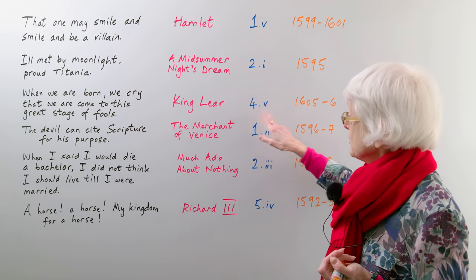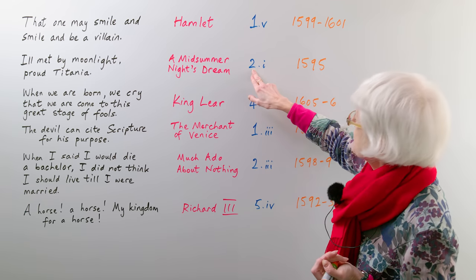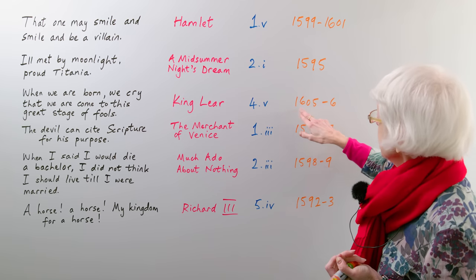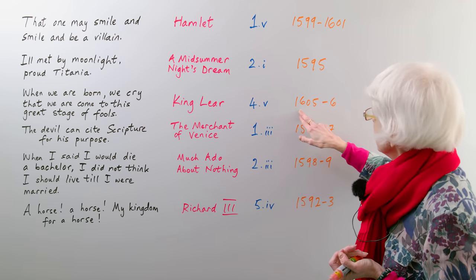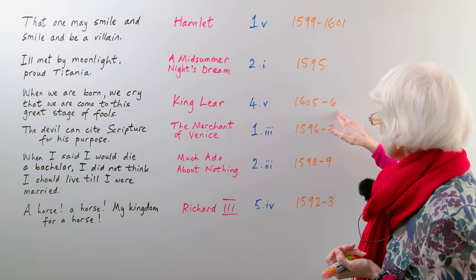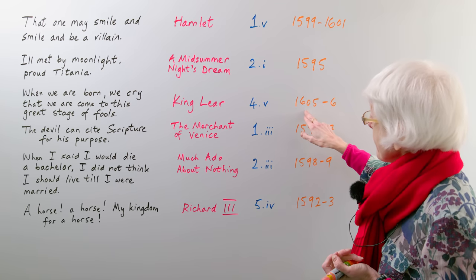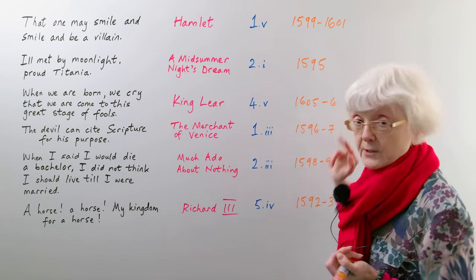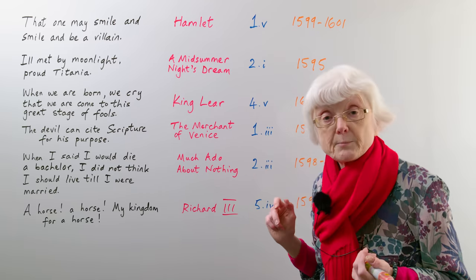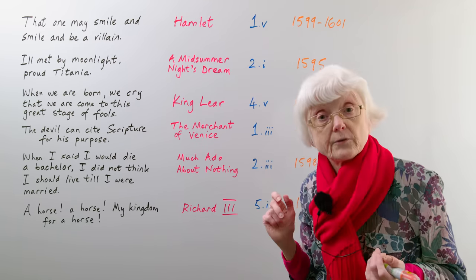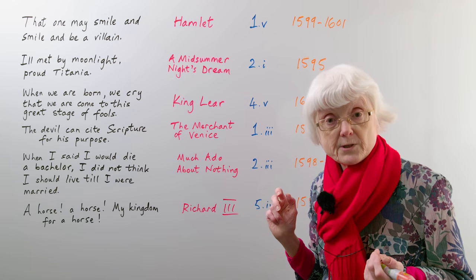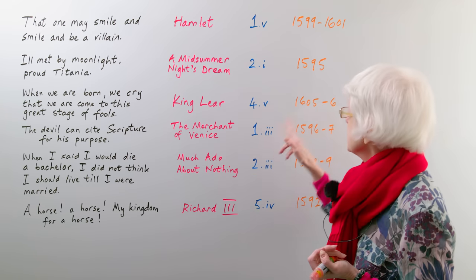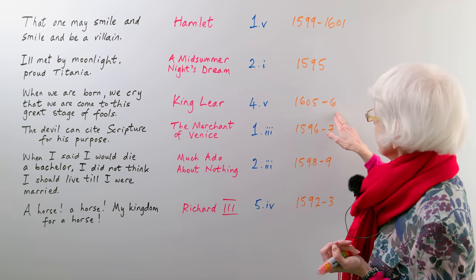That's from King Lear, Act 4, Scene 5. A Midsummer Night's Dream was Act 2, Scene 1, written in 1595. King Lear is a little bit later — 1605 to 6 — which was actually in the next period, the Jacobean period, because Queen Elizabeth I had died in 1603 and James I came to the throne.